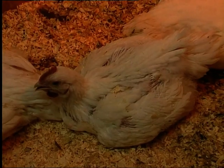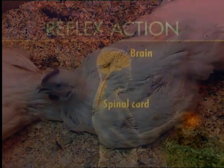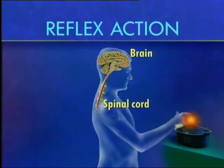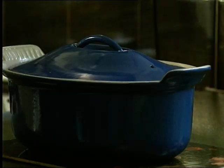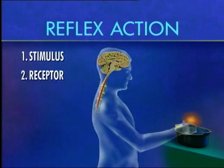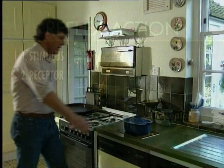But simple though reflex actions appear, they involve five separate steps. The first is a change in the environment called a stimulus, which triggers the response. In these examples, that stimulus was heat. The second step is detection of a stimulus by receptors — in this case, sensory nerve endings in the skin.